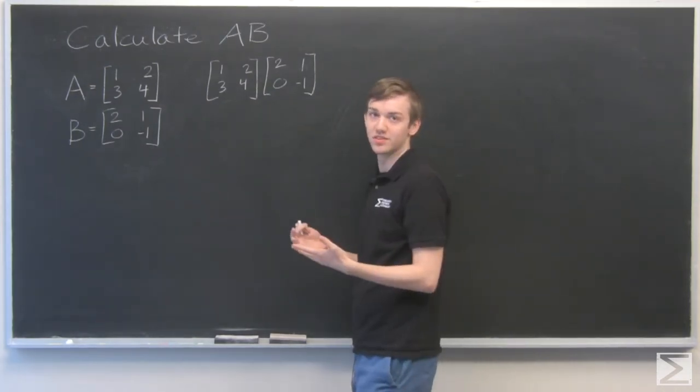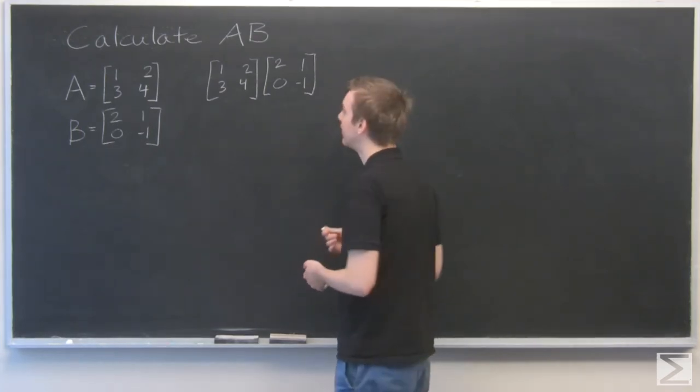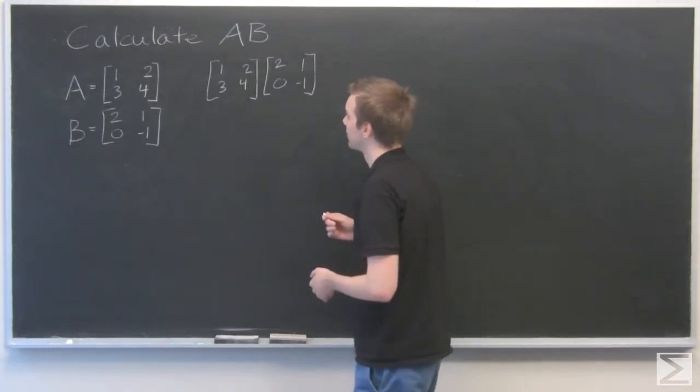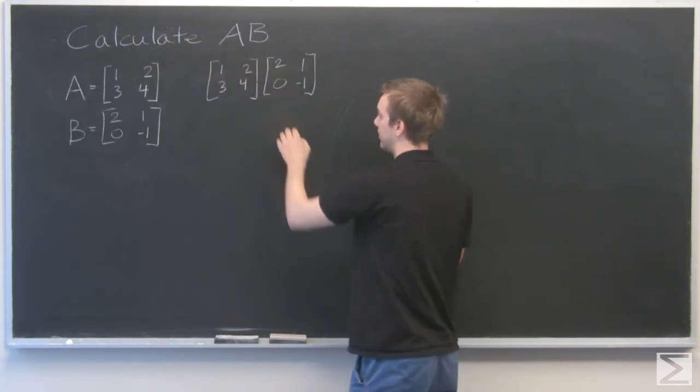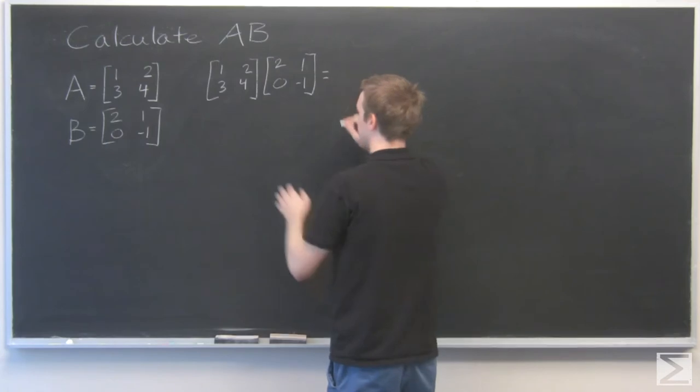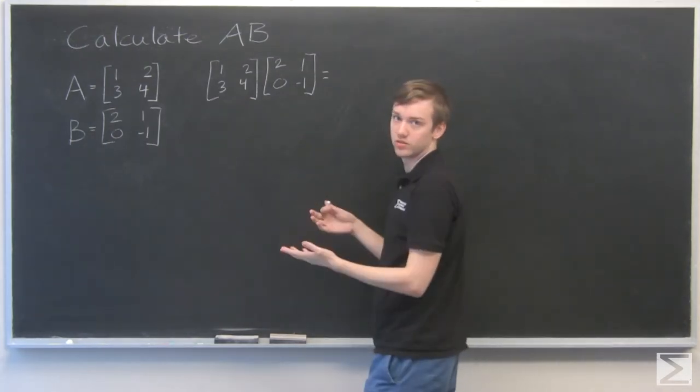For some matrices, it's impossible to multiply them, but these two, their sizes work out. So to multiply, we multiply a row on this side by a column on this side, and our result, because this is 2 by 2 and this is 2 by 2, will be another 2 by 2 matrix.